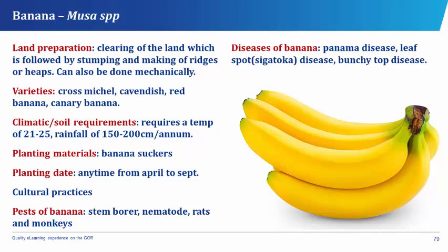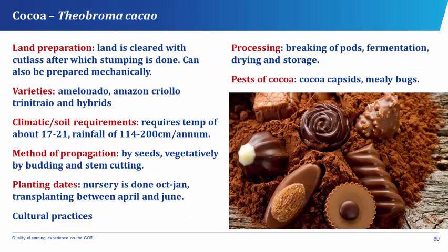The cocoa has its botanical name as Theobroma cacao. The cocoa is a beverage crop used in the preparation of many food drinks like Ovaltine, Bonvita, Pronto, etc. in Nigeria. It belongs to the plant family called Sterculiaceae. The fruit is called a cocoa pod.